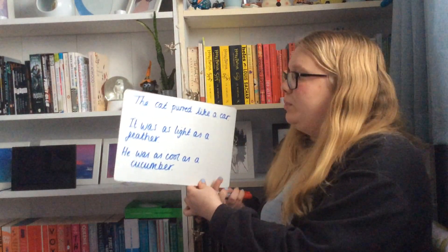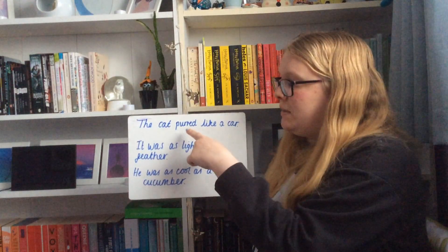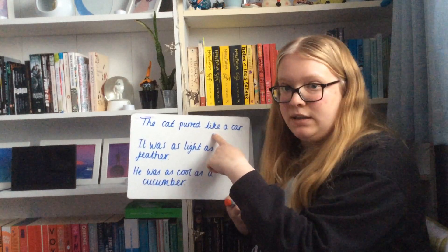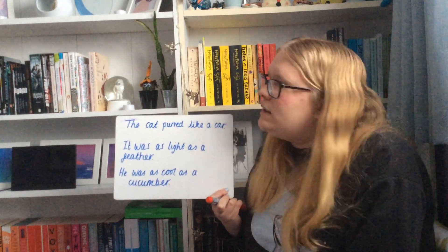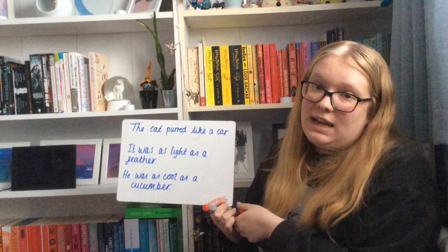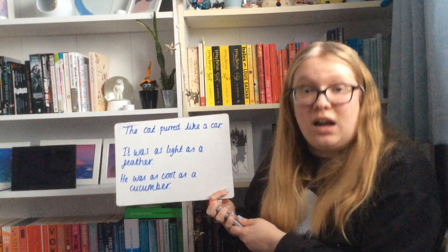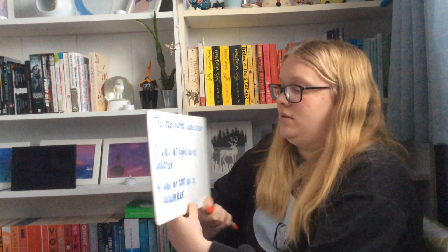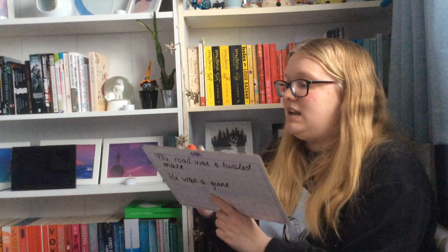A simile is when you are describing something is like something else. For example, the cat purred like a car. So we're not saying the cat is a car, we're saying the cat purr is like a car. Like is the word that's going to help us here.